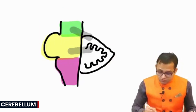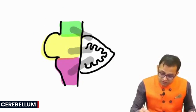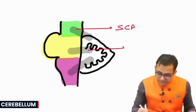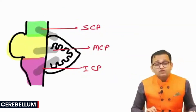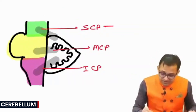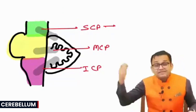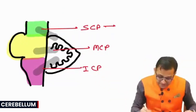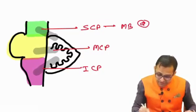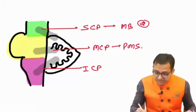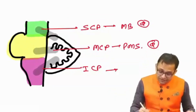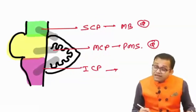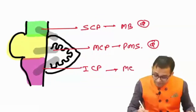One, two, three — these are known as the superior cerebellar peduncle, middle cerebellar peduncle, and inferior cerebellar peduncle. The superior cerebellar peduncle attaches the cerebellum with the midbrain. The middle cerebellar peduncle attaches the cerebellum with the pons. The inferior cerebellar peduncle attaches the cerebellum with the medulla.